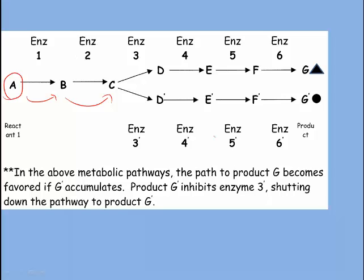It can go on and produce D or D prime, and the end product of one pathway would be molecule G, and the end product of the other pathway would be G prime. Now, G and G prime never accumulate because as they are produced, they are moved to another location and used, perhaps to build another molecule. So as long as they're being whisked away, these pathways can continue.